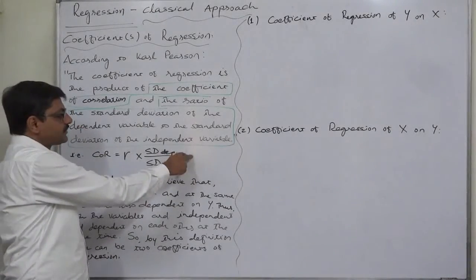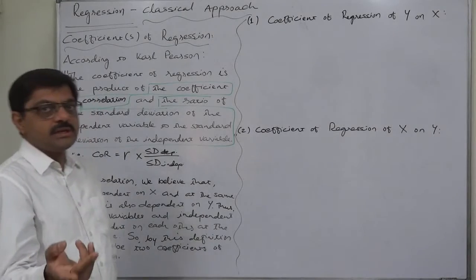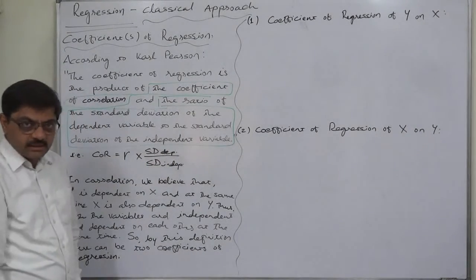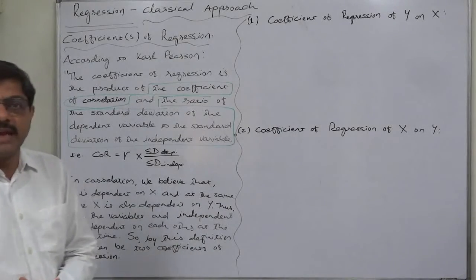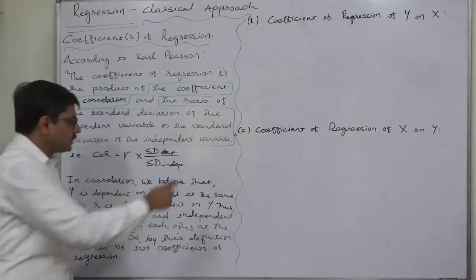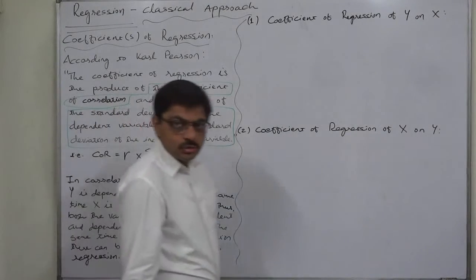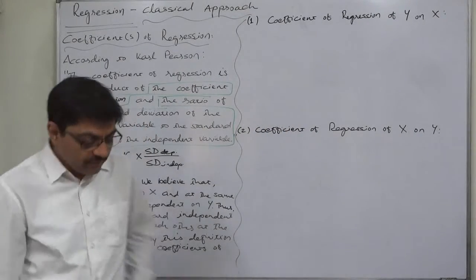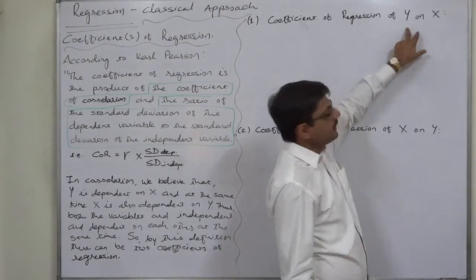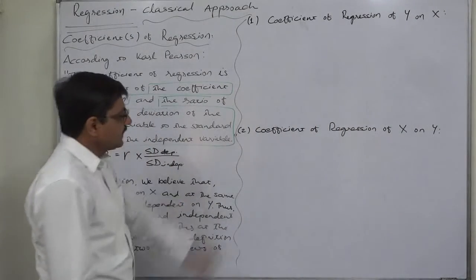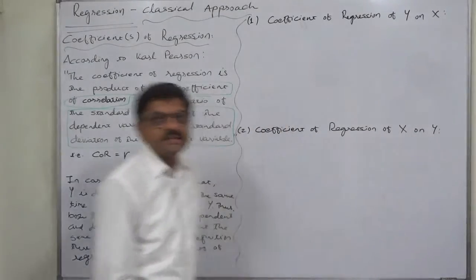So, the ratio of standard deviation of the dependent variable to the standard deviation of the independent variable can be different under two scenarios. When we believe that Y is dependent on X, the ratio becomes standard deviation of Y to the standard deviation of X. And when we believe that X is dependent on Y, this ratio becomes the ratio of standard deviation of X to the standard deviation of Y. So, there can be two coefficients of regression: one is the coefficient of regression of Y on X, where Y is the dependent variable and X is the independent variable; and another is the coefficient of regression of X on Y, where X is the dependent variable and Y is the independent variable.